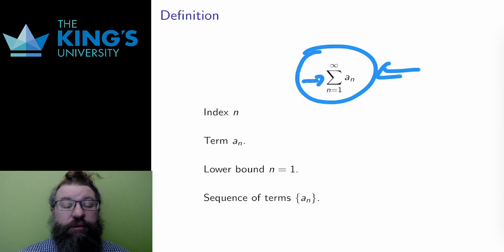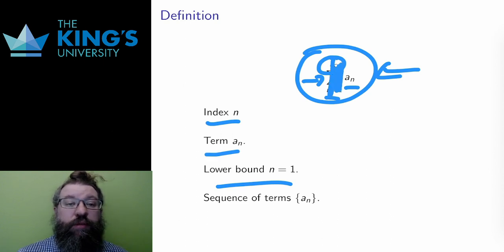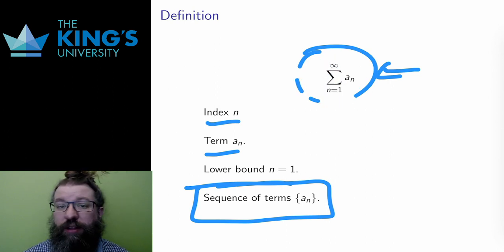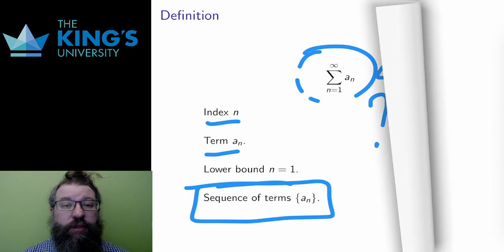It's normal sigma notation, but now the upper bound is replaced with infinity. n is the index, n equals 1 is the starting index or the lower bound. a sub n is the term. And if I just want to talk about the terms without thinking of them as sums, I can think of the sequence of the terms an. That's the idea. An infinite sum looks just like a finite sum, but goes on forever. Does this idea make sense? Is taking an infinite sum a thing that can be done? It is, and calculus makes sense of it.